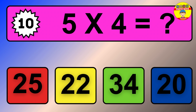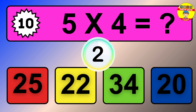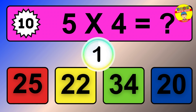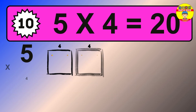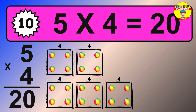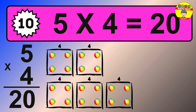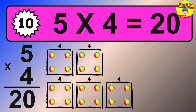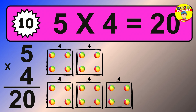Question 10. 5 times 4 equals what? The answer is 5 times 4 is 20. To calculate, we have 5 groups with 4 balls each one. So how many balls do we have? 20 balls.